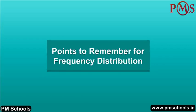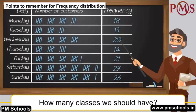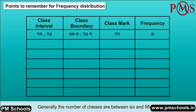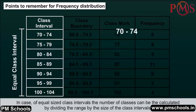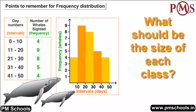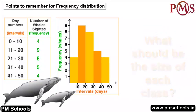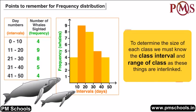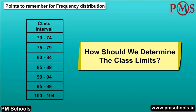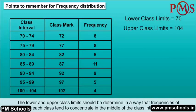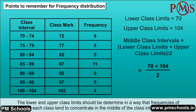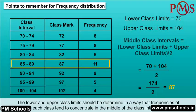Points to remember for frequency distribution: How many classes should we have? Generally, the number of classes is between 6 and 15 for equal sized class intervals. The number of classes can be calculated by dividing the range by the size of the class intervals. To determine the size of each class, we must know the class interval and range, as these are interlinked. Class limits should be definite and stated clearly; the lower and upper class limits should be determined so that frequencies of each class tend to concentrate in the middle of the class intervals.